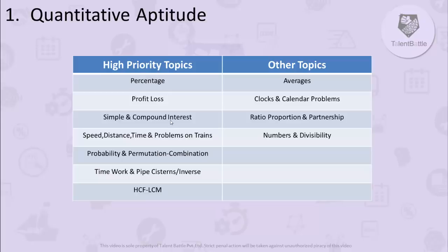Now, how will you start studying? From each and every topic, you need to solve at least 15 questions. One very important condition: all these 15 problems should be of different types — 15 different types of problems from percentage, similarly 15 different types from profit and loss, and so on. Some topics may have only 8 to 10 types, others just 4 to 5 types. Solving different types makes it easier to face actual exam questions rather than solving the same type repetitively.